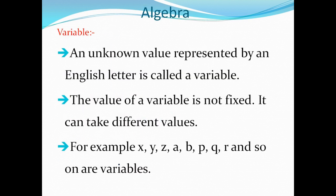First of all, what is a variable? Variable means it is the unknown value represented by an English letter — it is called a variable. We don't know the value, so we represent it using an English letter, like A, B, X, Y, Z, P, Q, R, S, and so on. The value of a variable is not fixed — it will change. It can take different values. So examples of variables are X, Y, Z, A, B, P, Q, R, and so on.